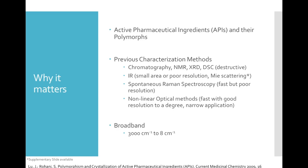For example, let's say the most stable form of an API takes longer to break down and get spread throughout the body. That would be great if you had a condition that needed to be acted on over time, but not so much if the API was being used as an NSAID, which decreases inflammation. Someone with a migraine wants it to go away as fast as possible, not over the course of a day. This is why it's important to identify the exact species, polymorph, and relative percentage of a drug you're trying to deliver.